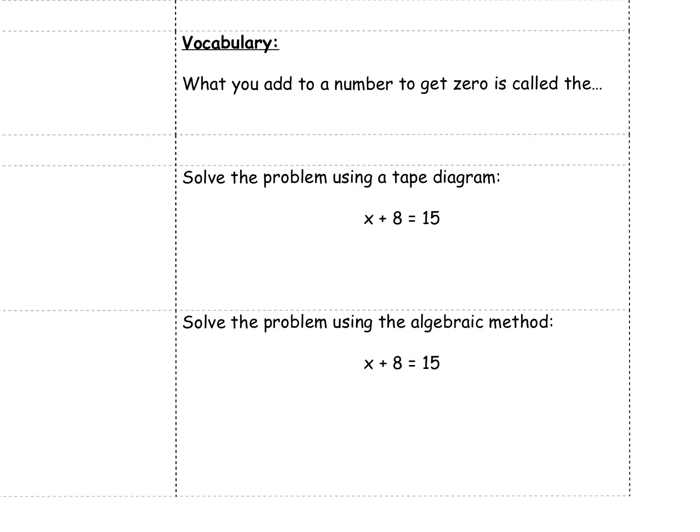So when we think about adding opposites and we get 0, we have a vocabulary word that goes with this. What you add to a number to get 0 is called the additive inverse. And so we're going to talk about what is the additive inverse to make 0. Even though it's the word additive, it can be a positive or a negative number.